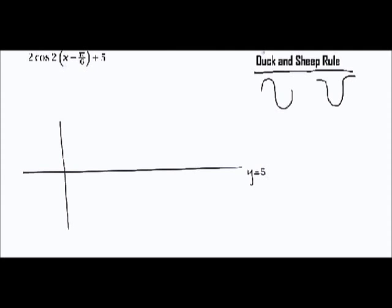This is why I invented the duck and sheep rules. Duck is for sine functions, and sheep is for cosine functions. Using these rules, you'll never make mistakes on these kinds of questions. So this is how we do it.